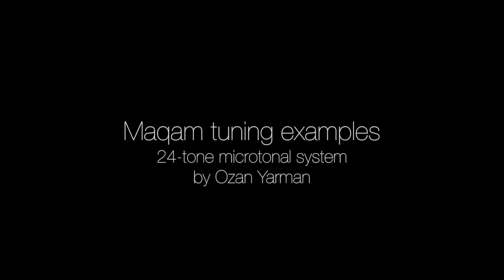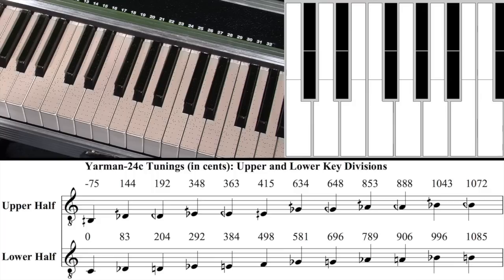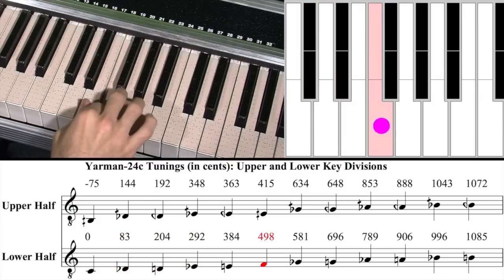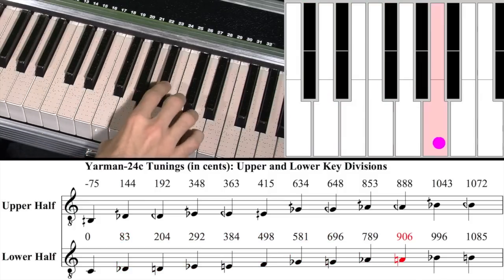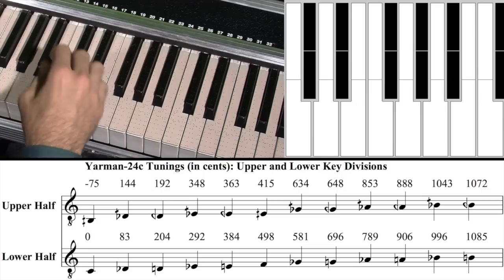Turkish Makam music makes frequent use of microtones. The following examples will use a 24-tone Makam tuning system developed by Dr. Ozan Yarman in Istanbul. The more frequently used tunings are on the front halves of the keys, and subtly different tunings are on the back.